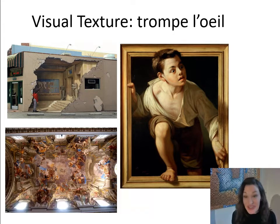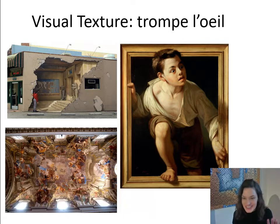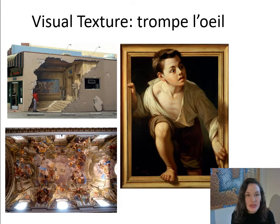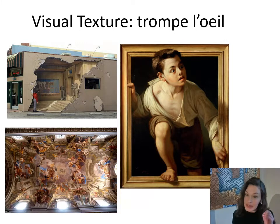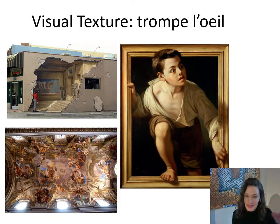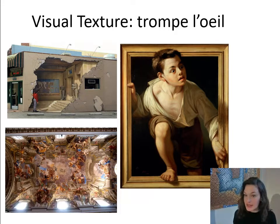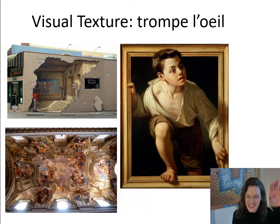Trompe l'oeil — it's hard to say, but in English you could say it like 'lawyer' or 'loyal' or 'Lloyd.' Trompe l'oeil refers to artwork that is painted with such extreme detail in its texture that it actually looks real. Now we're switching away from tactile texture to visual texture. Visual texture isn't necessarily actually there, but the artist paints or draws it in their artwork to trick us into thinking the texture is actually there.